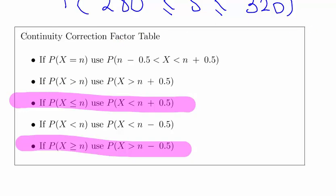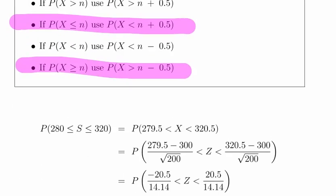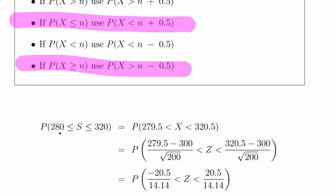Probability of 280 less than or equal to S less than or equal to 320—when we apply the continuity correction factors, I should use an S there—we are looking at computing the probability of being between 279.5 and 320.5.